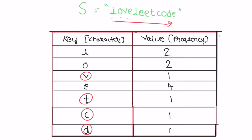In the walkthrough, we iterate from L to E. First we check L — its frequency is not equal to one, so it is not a unique element. Next we go to O — O's frequency is also not equal to one. Then we go to V — V's frequency is equal to one, so V is the first non-repeating element and will be the output.